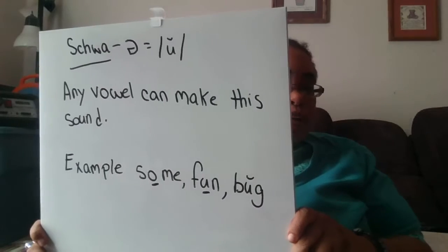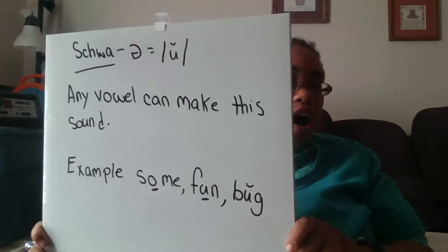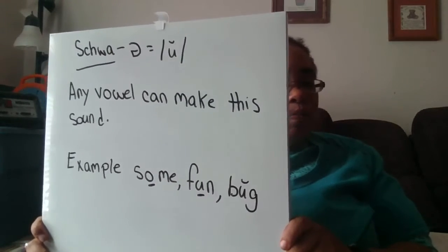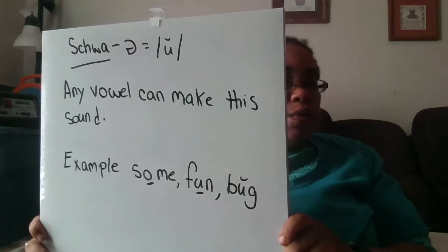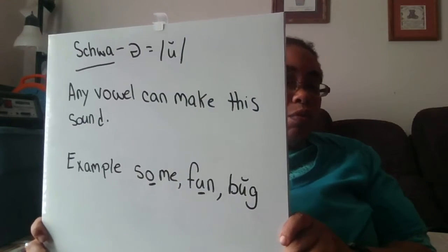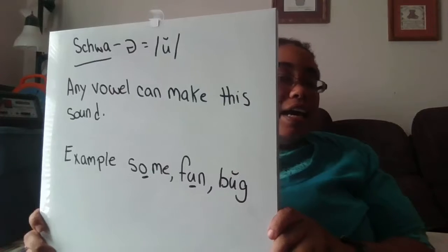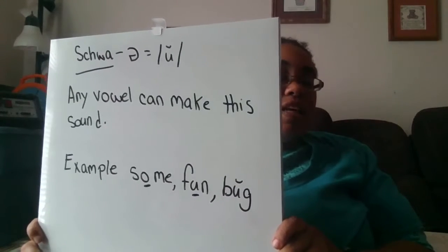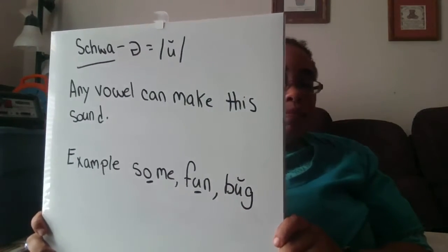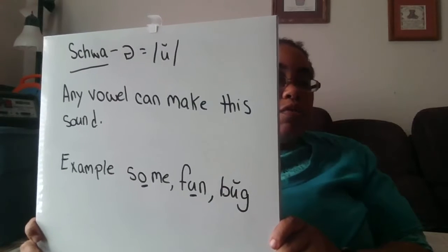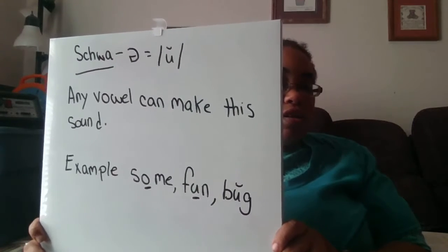Our first special symbol is called a schwa. This is not a letter but a sound. We show it with an upside-down E when we're reading phonetically. Any vowel can make the 'uh' sound, so when you see this symbol, your vowel will make the 'uh' sound.